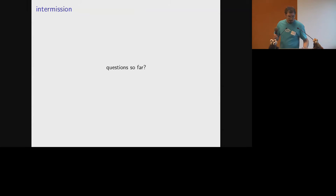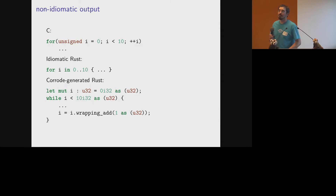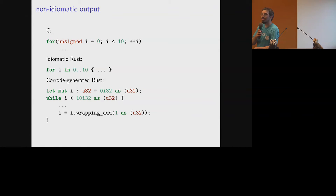Q: On your previous slide the prefix increment looked a bit weird - prefix versus postfix? It doesn't make any difference in that for loop whether it's prefix or postfix increment. I did have a teacher once who insisted you should choose one way over the other because of whether the compiler would generate more efficient code, which is utterly bogus at least on today's compilers.